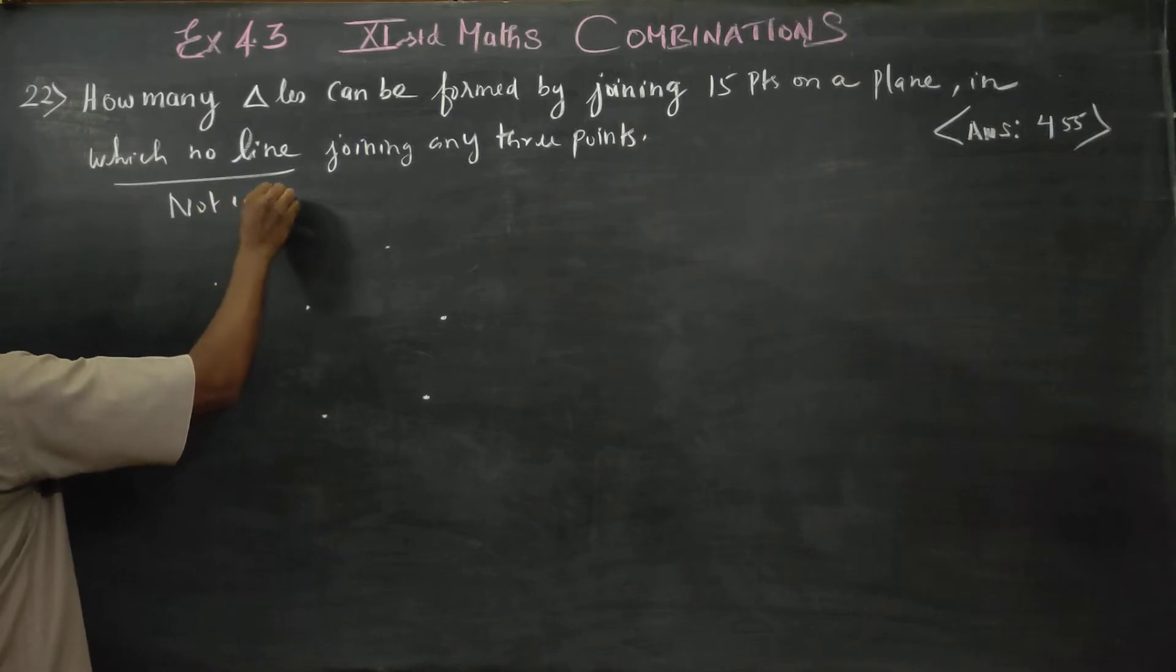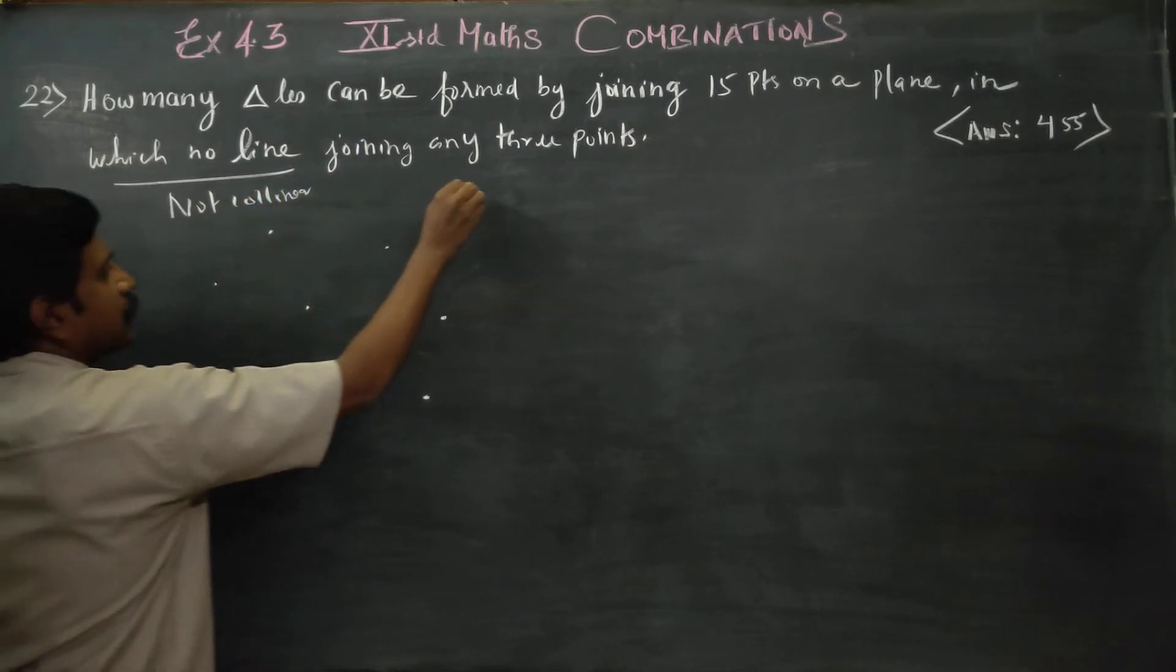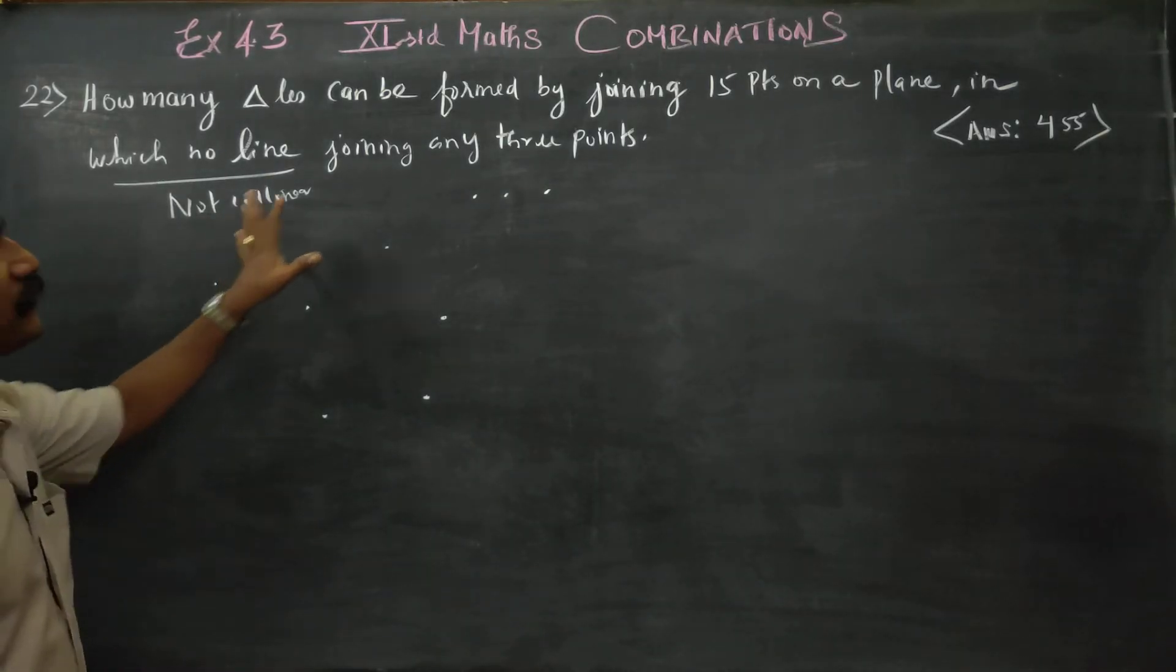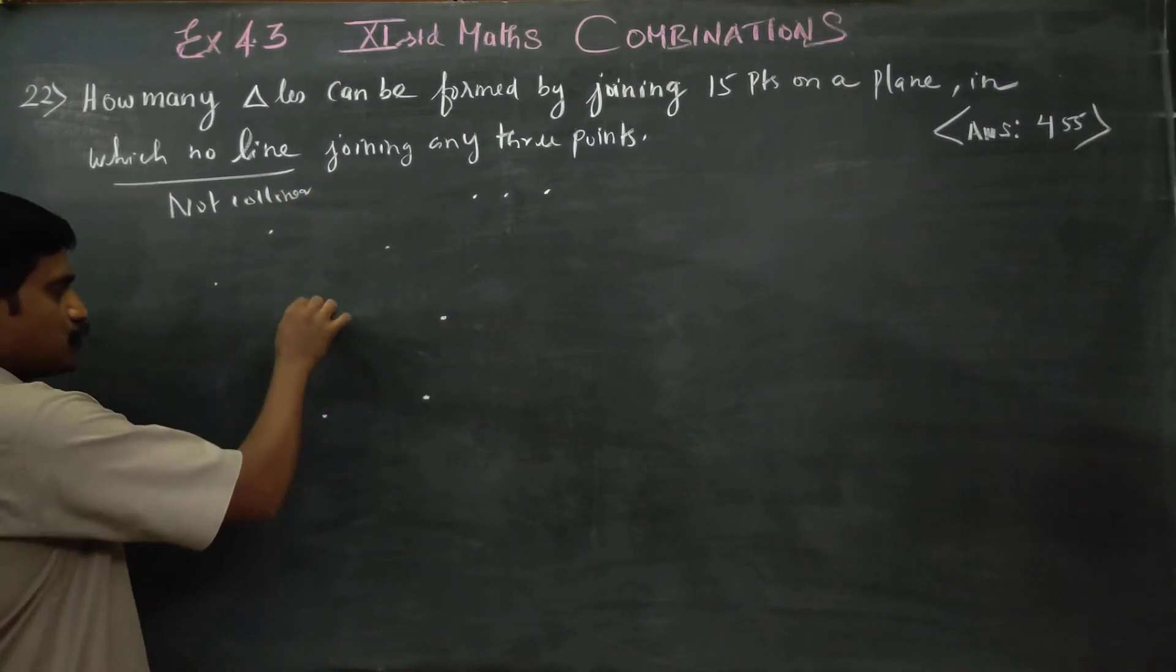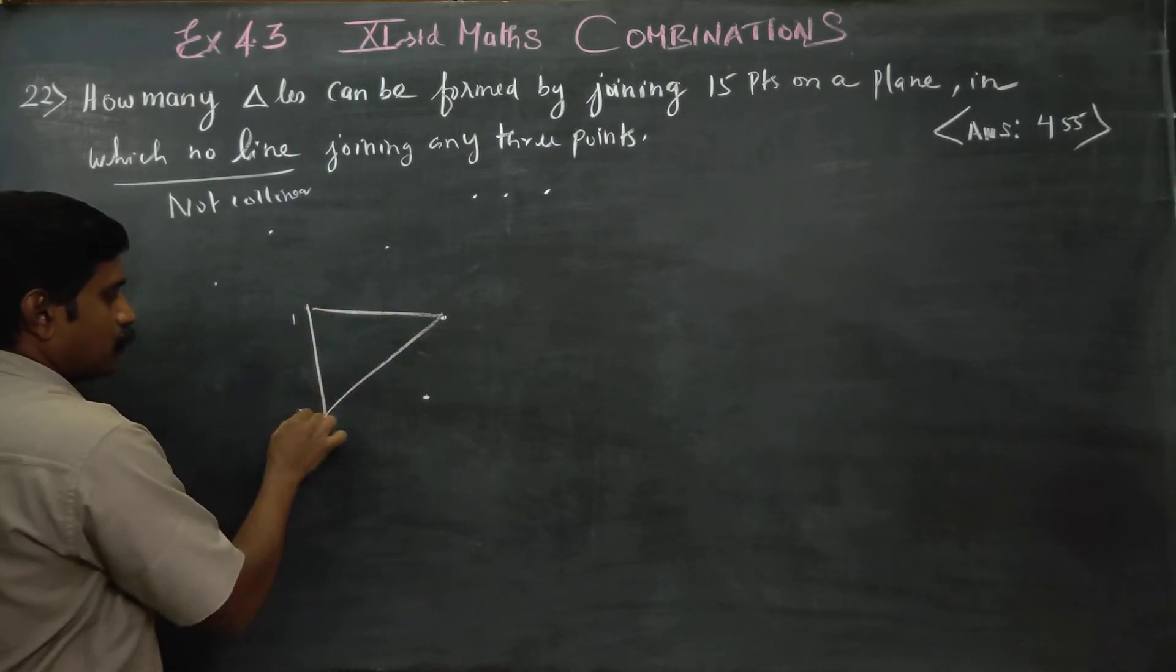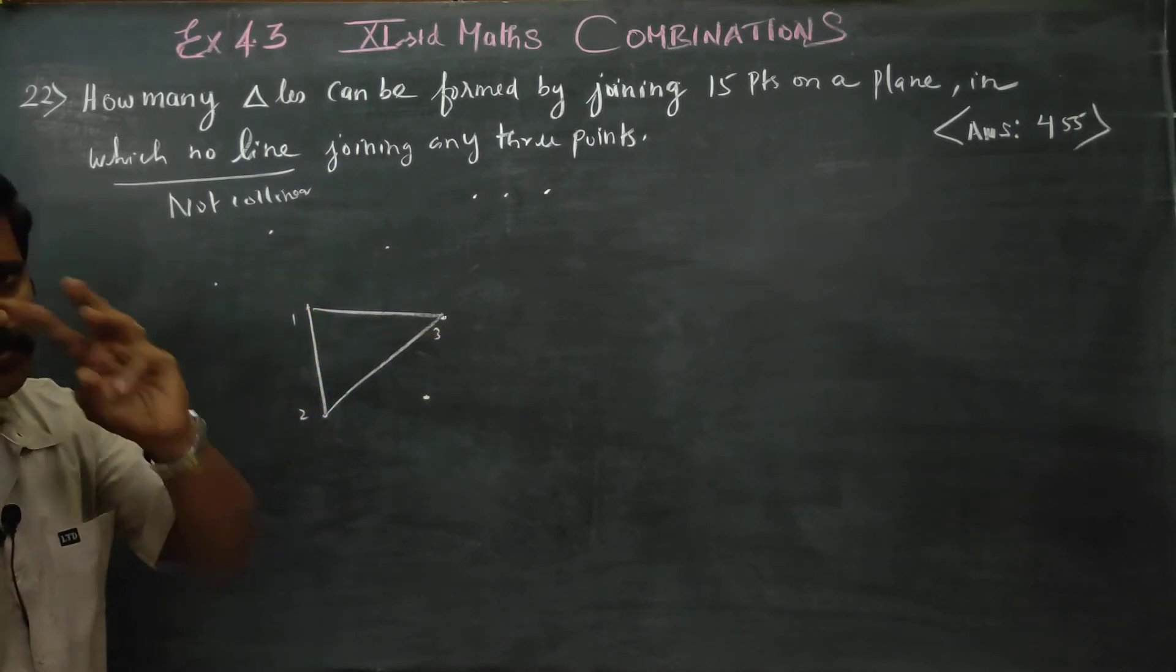If they are not collinear, you can draw a triangle. From 15 points you just choose any three points: first point, second point, third point. One, two, three. If you choose any three points, you will get a triangle.